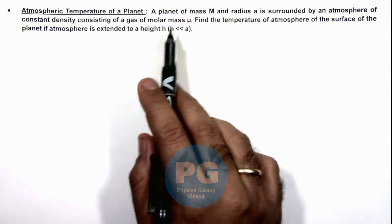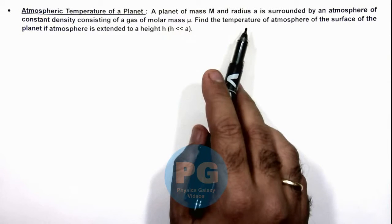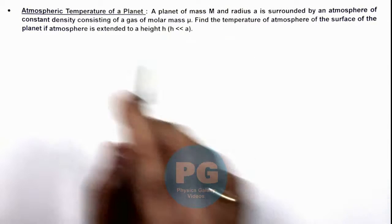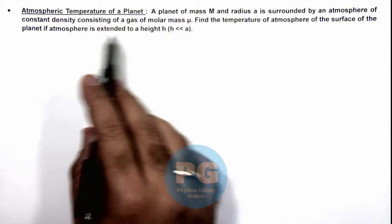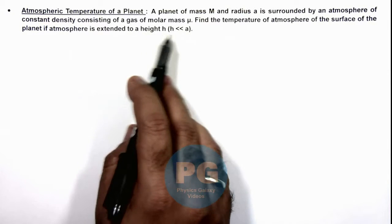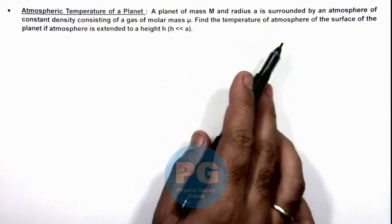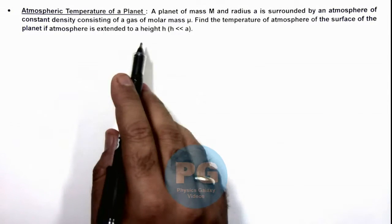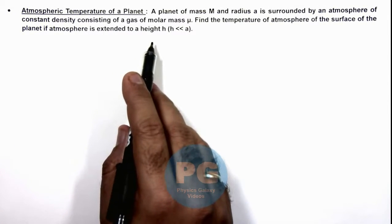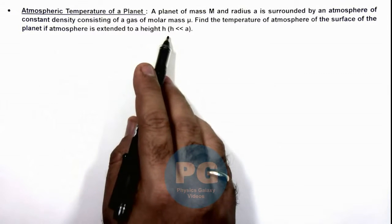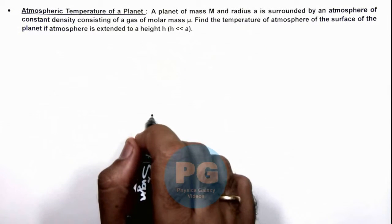We are given that a planet of mass M and radius a is surrounded by an atmosphere of constant density, consisting of a gas of molar mass μ. We are required to find the temperature of atmosphere at the surface of the planet if the atmosphere is extended to a height h, where h is very small compared to the radius of the planet.